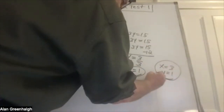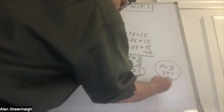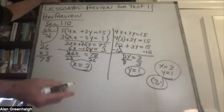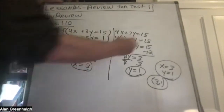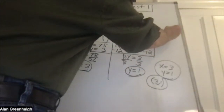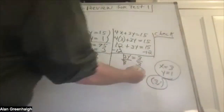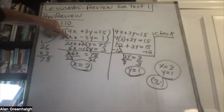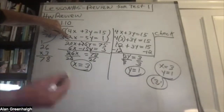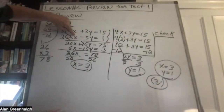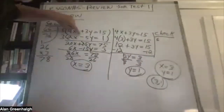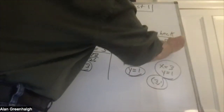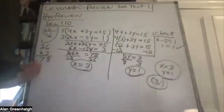The answer is x equals three, y equals one — you can write it as an ordered pair (3, 1). There's an optional third part which is the check: substitute (3, 1) into the second equation. Two times three is six, minus five times one is five — does that equal one? Yes. That's your check.